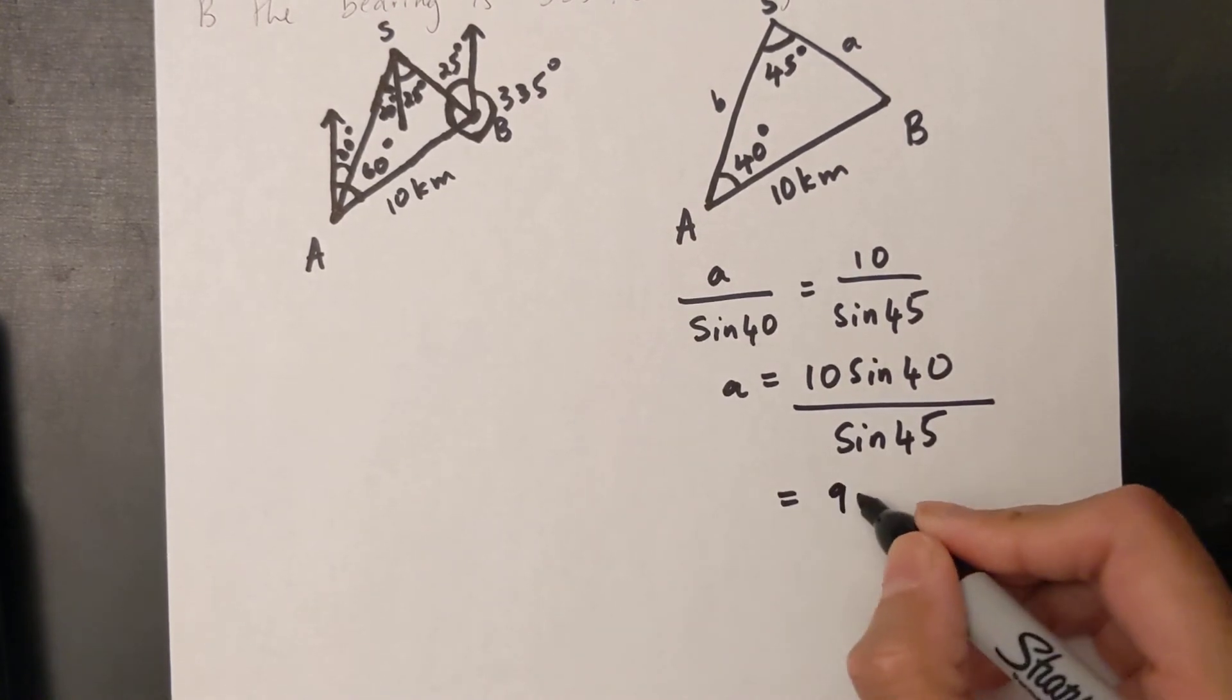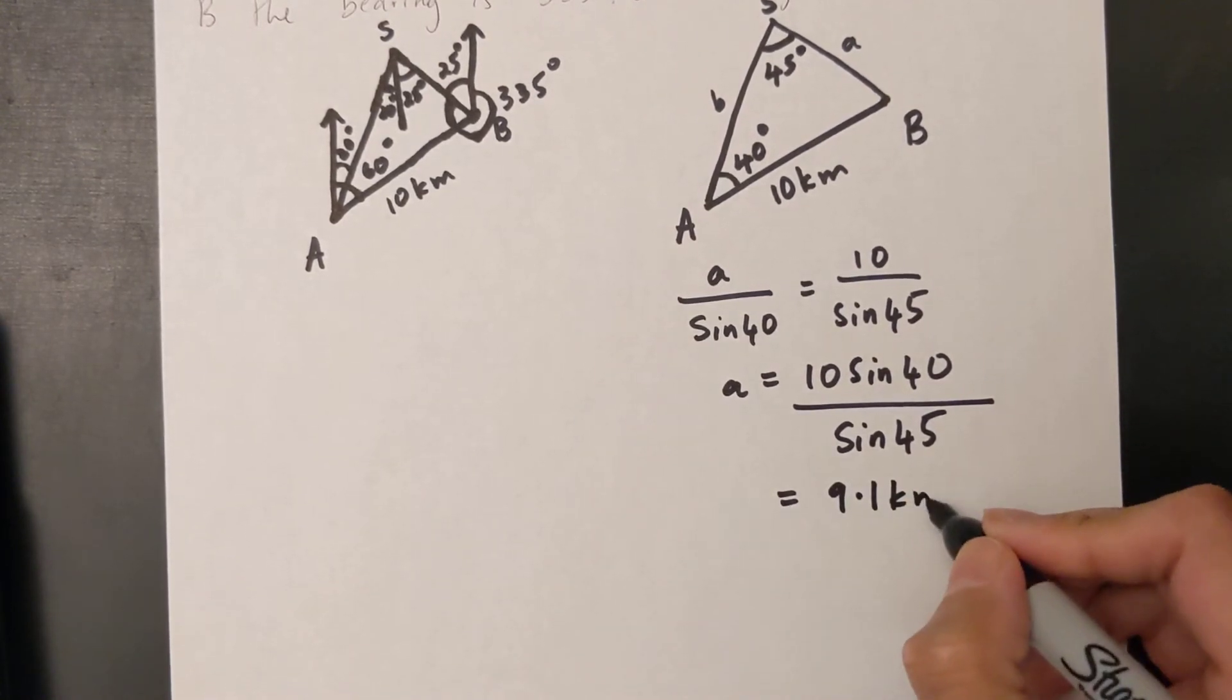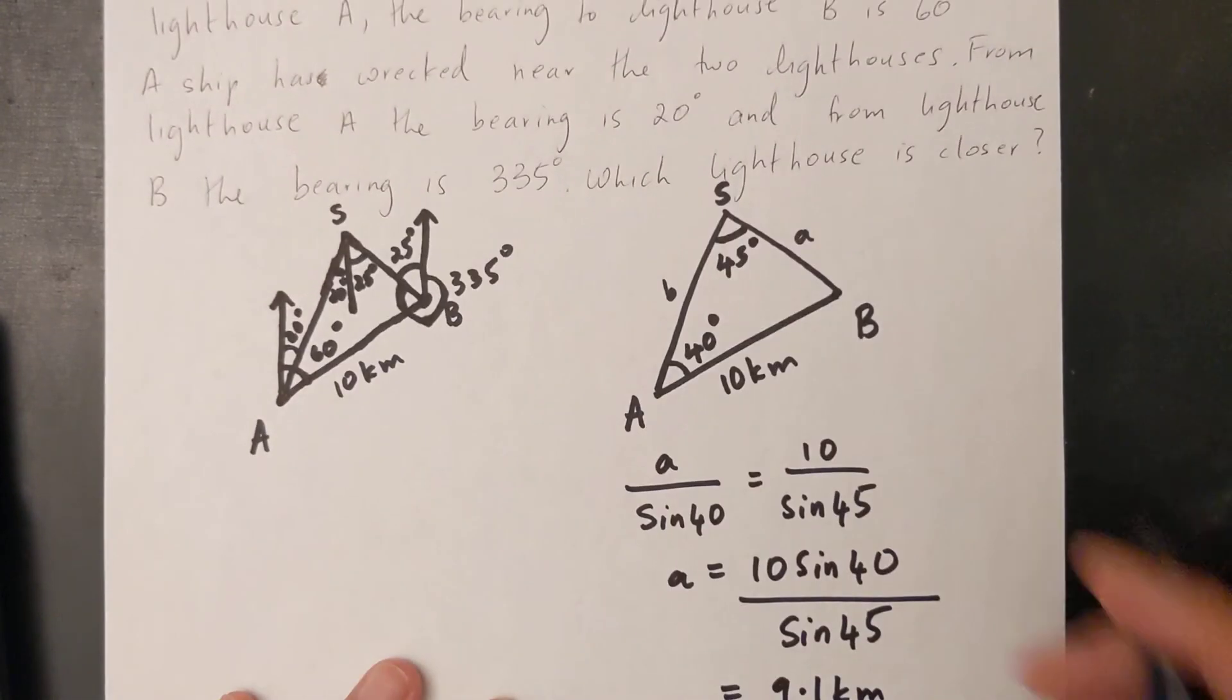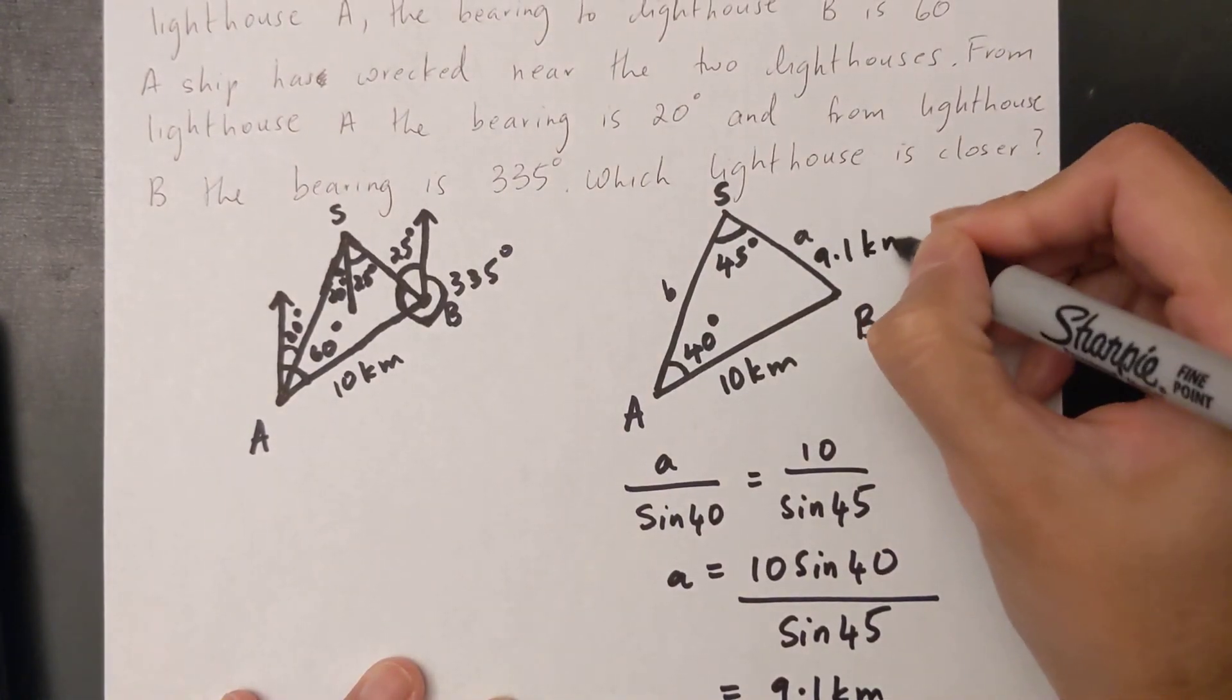Just did my cross multiplication there and I'll put it in my calculator. So that is 9.1 kilometers. I'll label that here 9.1 km.